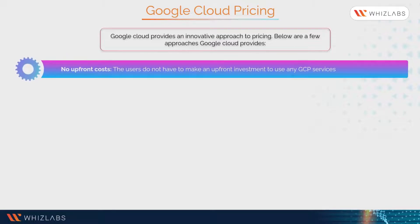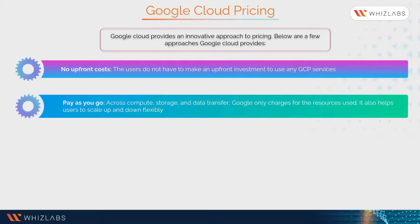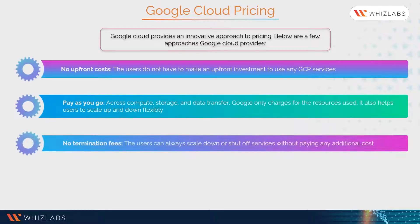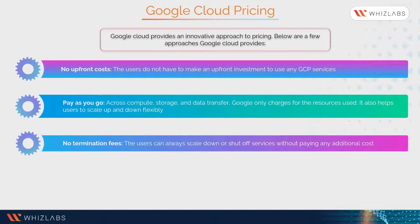The four pricing principles are: no upfront costs — users do not have to make an upfront investment to use any GCP services; pay-as-you-go across compute, storage, and data transfer — Google only charges for resources used, and it helps users scale up and down flexibly.